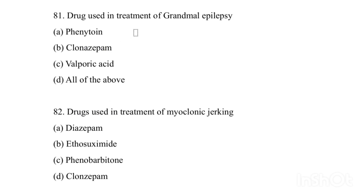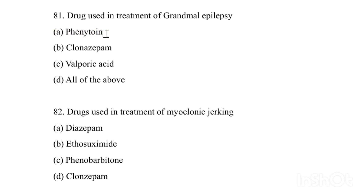Drugs used in the treatment of grand mal epilepsy: Option A: Phenytoin. Option B: Clonazepam. Option C: Valproic acid. Option D: All of the above. Answer is Option A — Phenytoin is used in grand mal epilepsy.